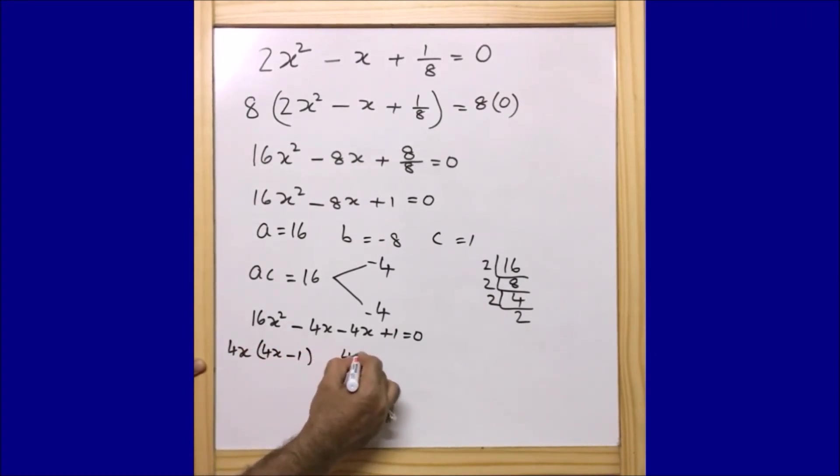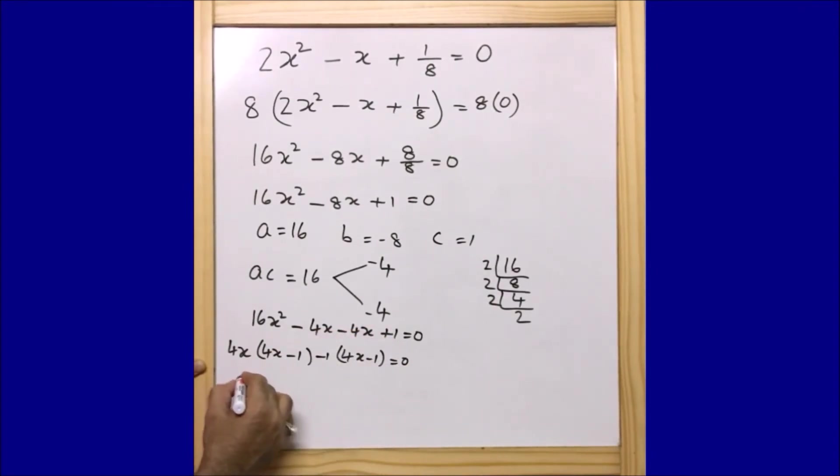Similarly, 4x - 1 = 0. Here it is my 4x, that means I should take -1. -1 × 4x is -4x, -1 × 1 × -1 is +1. Now the two equations that we are going to get here is (4x - 1) and again (4x - 1).